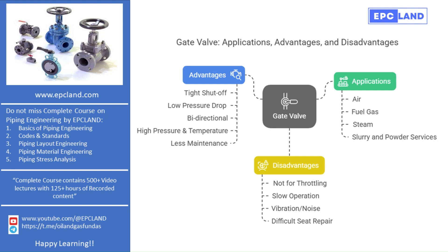Let's begin with the most basic question: where are gate valves used? Gate valves are one of the most widely used types of valves in industrial piping systems. Their primary function is to either fully open or fully close the flow of fluid — they act like a switch for fluids in pipelines. Because of their design, gate valves offer very low resistance to flow when fully open. You will find gate valves in a variety of fluid systems such as airlines, fuel gas systems, steam lines, feed water systems, lube oil pipelines, and various hydrocarbon services. Essentially, almost any process system that requires a tight shut-off mechanism can use gate valves.